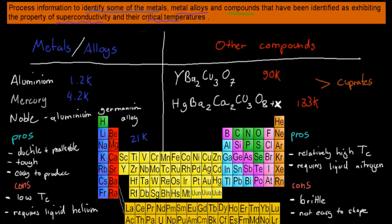We can put superconductors into two categories: metals and alloys, and other compounds. Metals include your group 1, group 2, and transitional metals, for example aluminium. Alloys are combinations of two or more metals, such as transitional metals and aluminium.